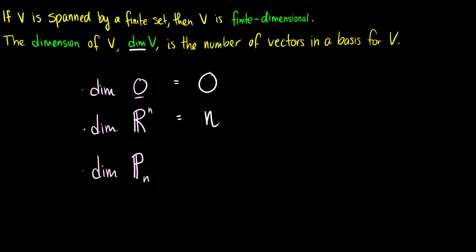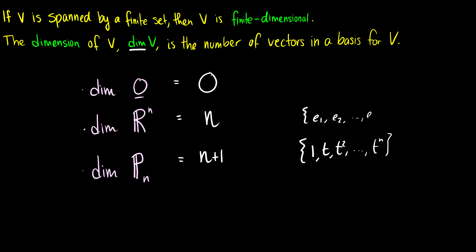What about polynomial space Pn? The standard basis for Pn is 1, t, t squared, all the way up to t^n. So we can see we need n plus 1 vectors. For Rn, we could use the standard basis, which is just e1, e2, all the way up to en. To know the dimension of a space, we can just consult the standard basis.